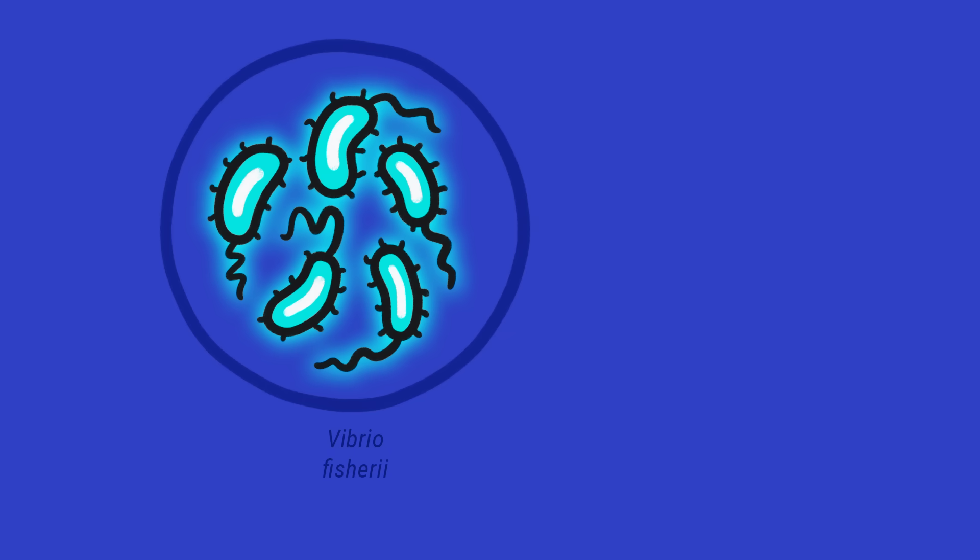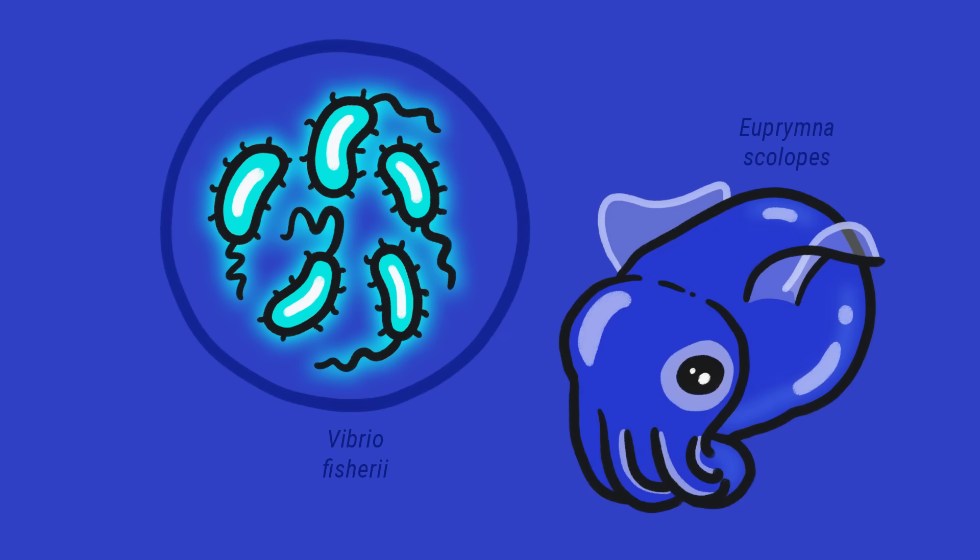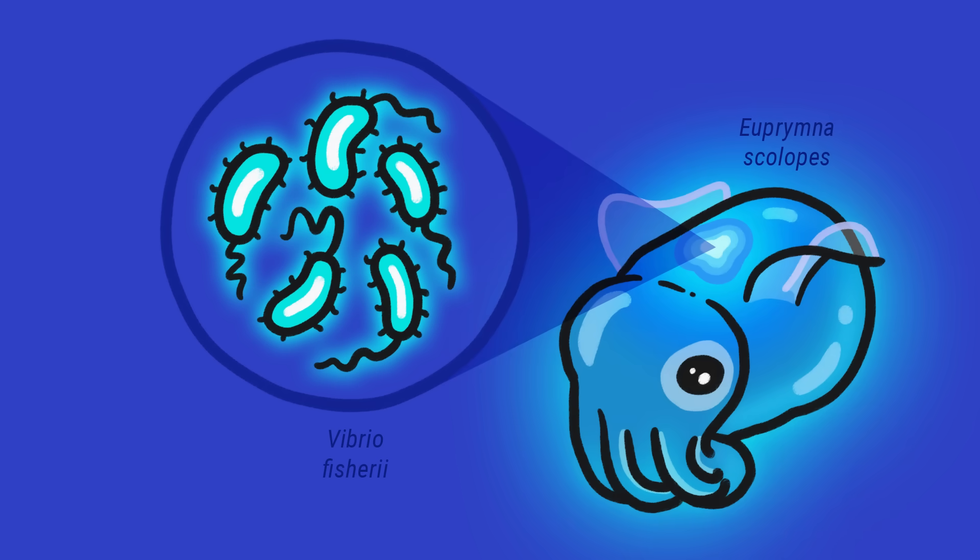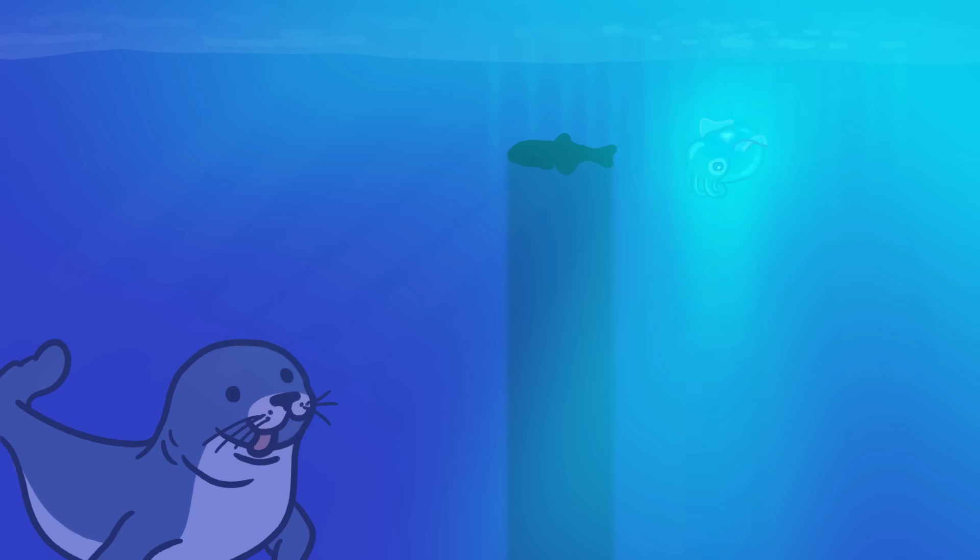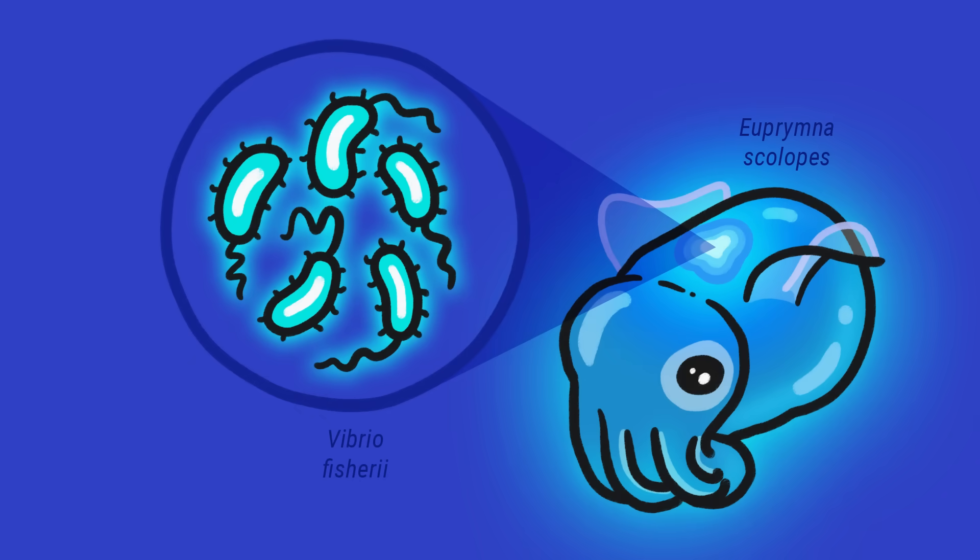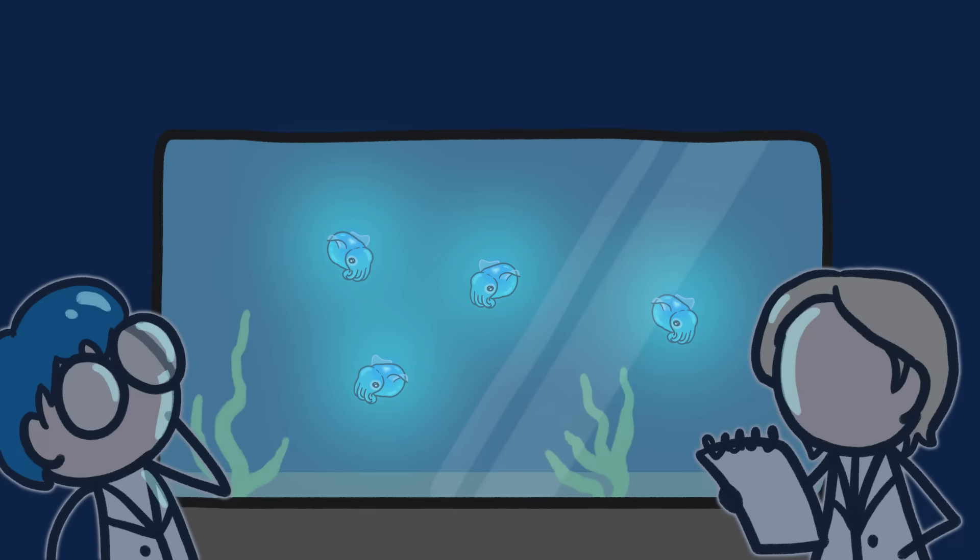Some bacteria, like Vibrio fischeri, are really good friends with other organisms. They grow in the light-producing organs of the bobtail squid. It's so cute! The luminescent bacteria help the squid camouflage itself. If you want to study these friendships in the lab, you'll have to actually build an aquarium full of squid to grow together with these bacteria.